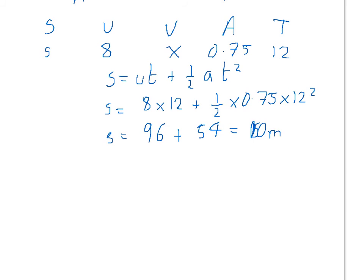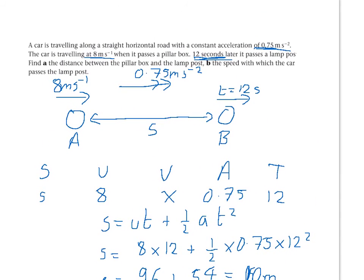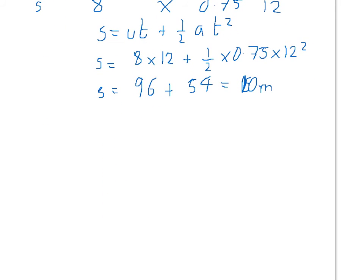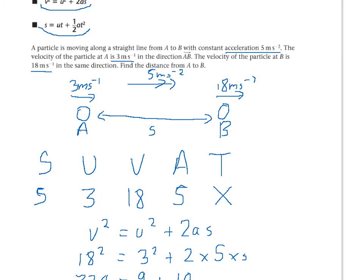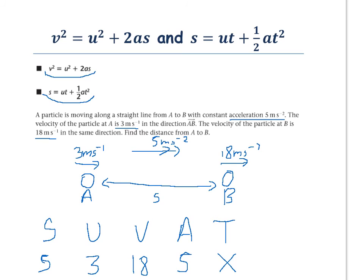Now we look at the second part: calculate the speed with which the car passes the lamppost. Writing down SUVAT again: this time we actually know everything apart from the final velocity, which is what we're trying to find. S is 150 because we just found that, initial speed is 8, acceleration is 0.75, and time is 12. We need an equation to find the final velocity, so we look at V squared equals U squared plus 2AS — that lets us find V.